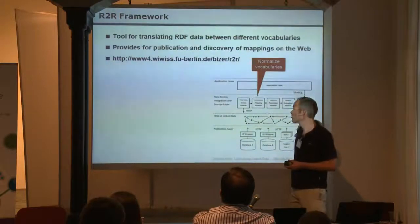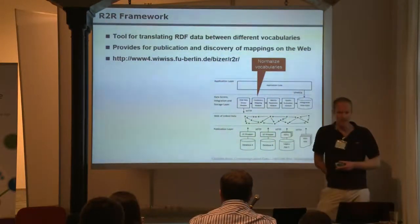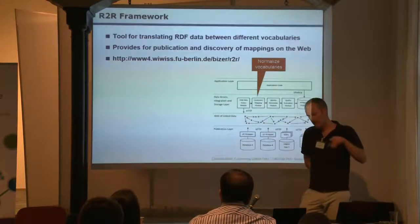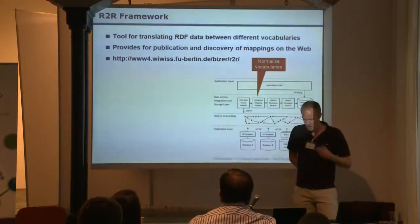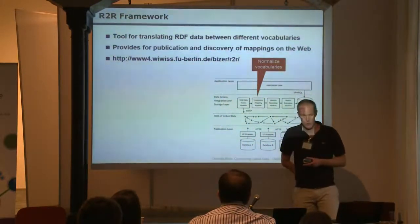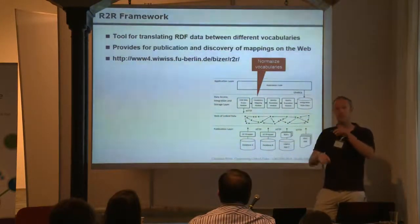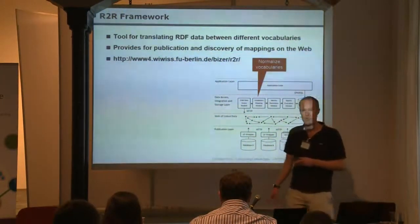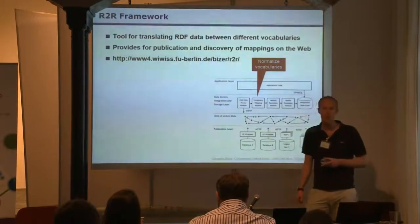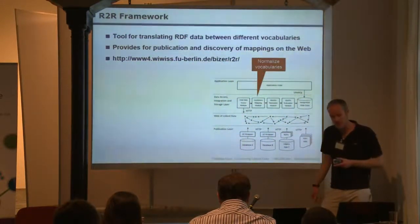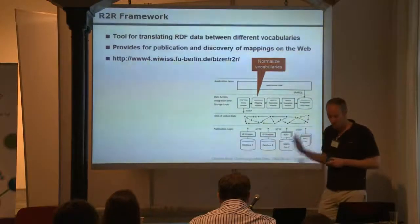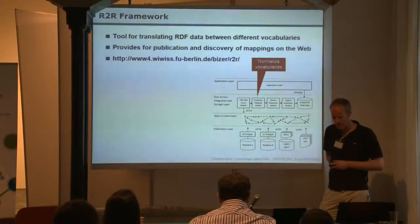There's the R2R framework for translating data between different vocabularies. In the semantic web community there is also OWL, which allows you to express some data translation knowledge, but the idea with R2R was to have a language that allows you to express all the sophisticated data translation needs in real-world settings — like structural transformations or property value transformations. For example, one data source uses Fahrenheit, the other Celsius, so you need a function to recalculate values. All this can be expressed using the R2R framework.